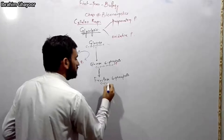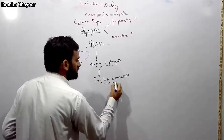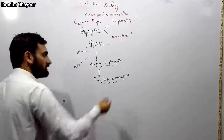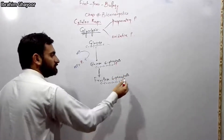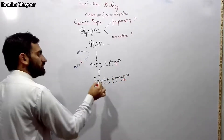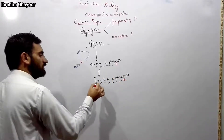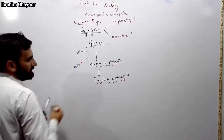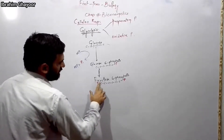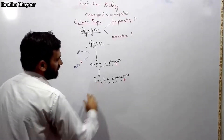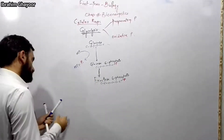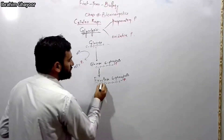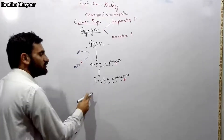A phosphate group is attached at carbon-1 and carbon-6. Another ATP molecule is used here, and ATP breaks down to ADP. Fructose-6-phosphate becomes fructose-1,6-bisphosphate. This is the phosphorylation step requiring a second ATP investment.